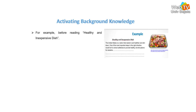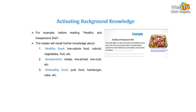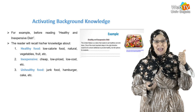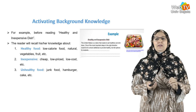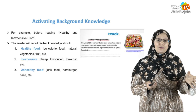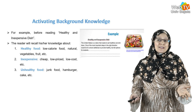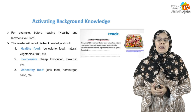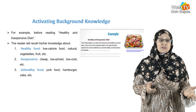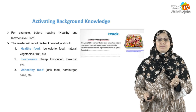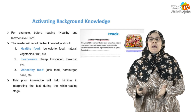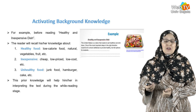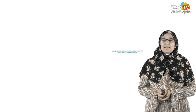Always under the heading of activating background knowledge, here are two examples. The first example is about reading a text about a healthy and inexpensive dish. The reader will recall his or her knowledge about healthy food — words like low-calorie food, natural vegetables, and fruits may come to mind. For inexpensive, words like cheap, low-priced, and low-cost are related. For unhealthy food, the reader might recall words like junk food, hamburger, and cake. This prior knowledge will help in interpreting the text during the while-reading stage.